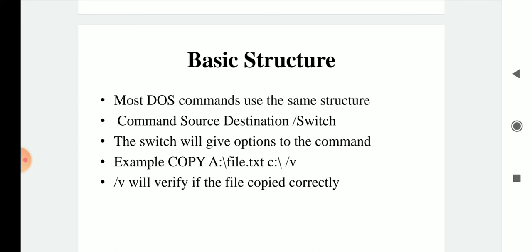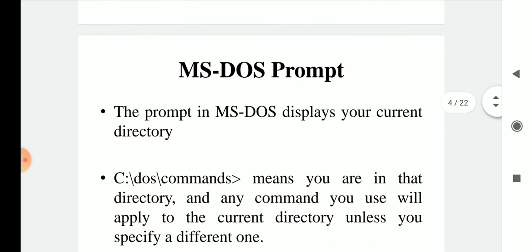Here I am using /V as the switch for the copy command. In this example, we are copying file.txt from the source to the destination, and /V is used for verifying whether the file was copied correctly or not. So the basic structure of MS-DOS is: first write your command, then the source address, then the destination address, and then the switching option if needed.